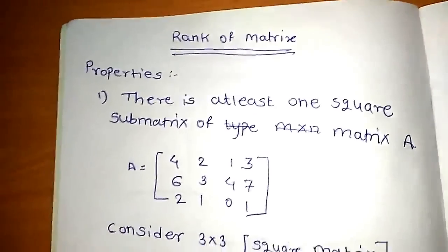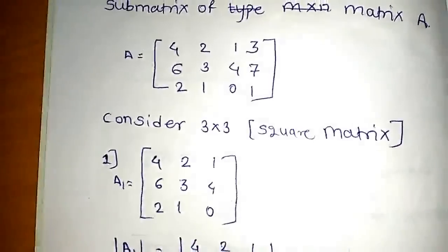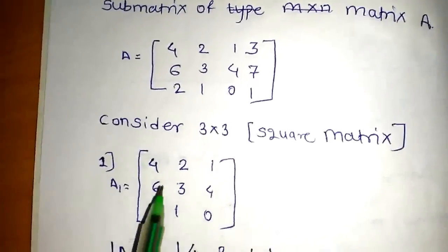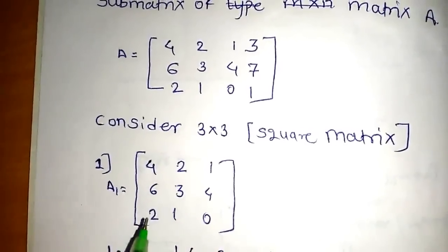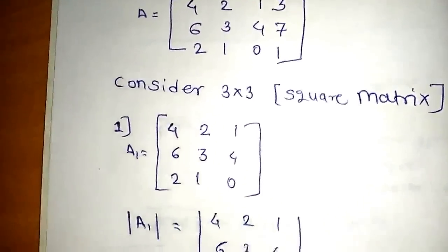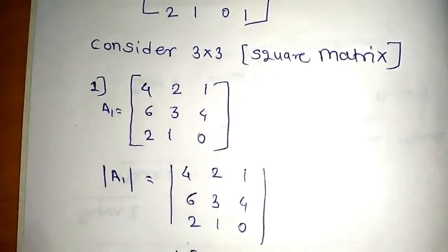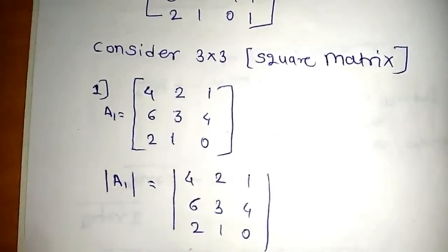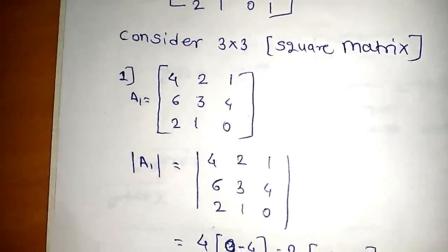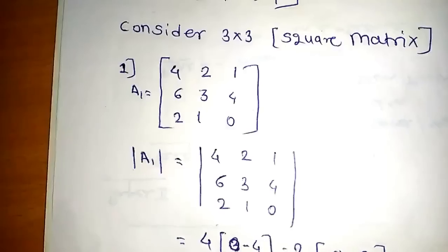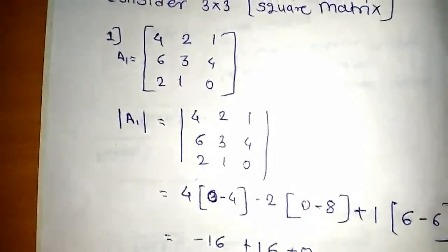To find the rank of the matrix, we first consider all 3x3 square matrices. The first square matrix A1 we consider is: 4, 2, 1, 6, 3, 4, 2, 1, 0. We have to find the determinant. If the determinant is non-zero, then that square value is the rank of the matrix.